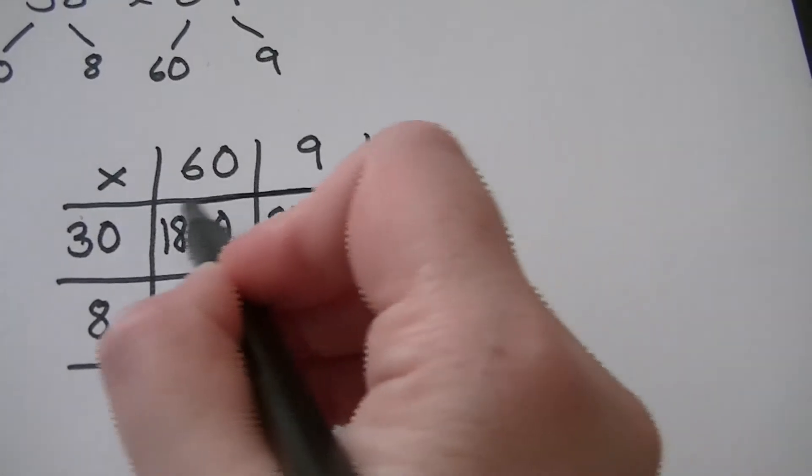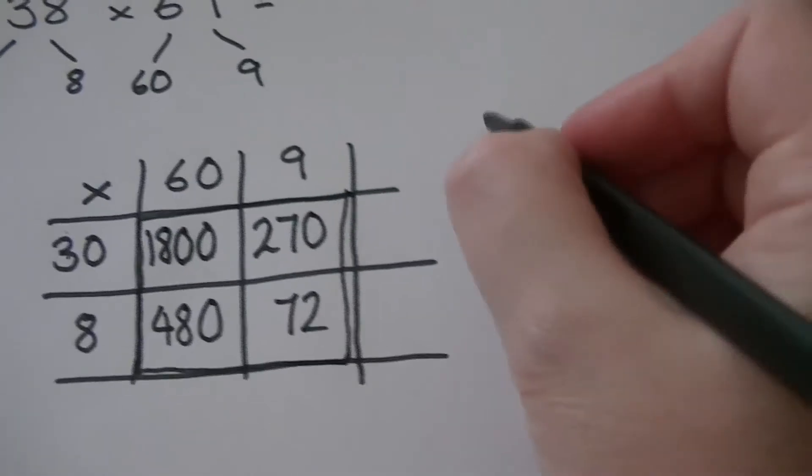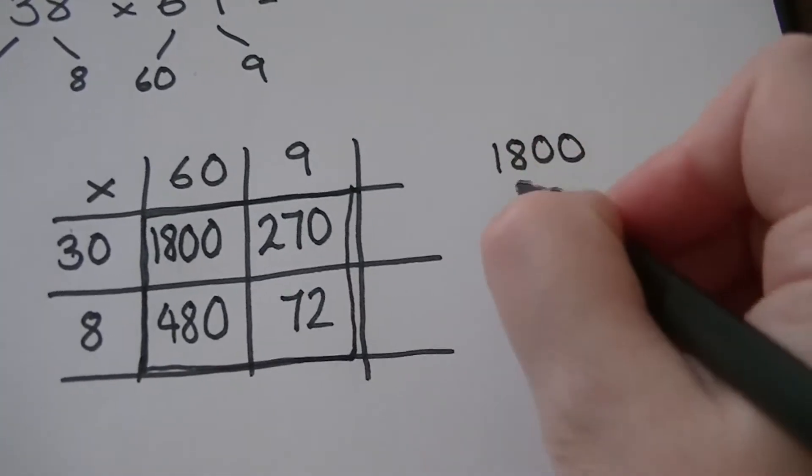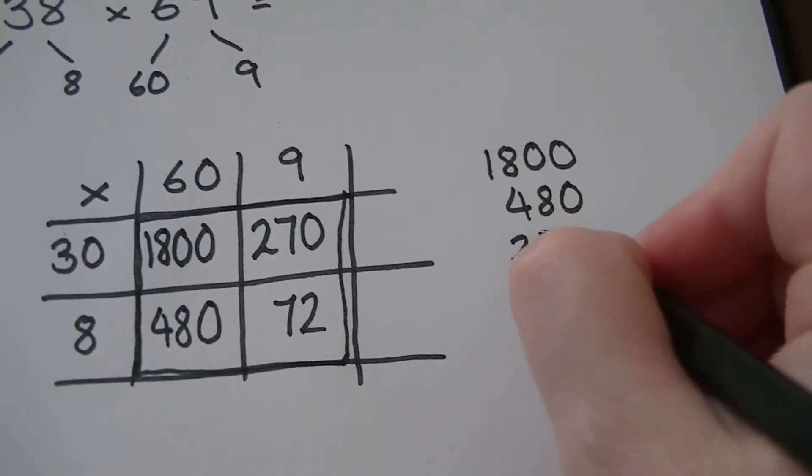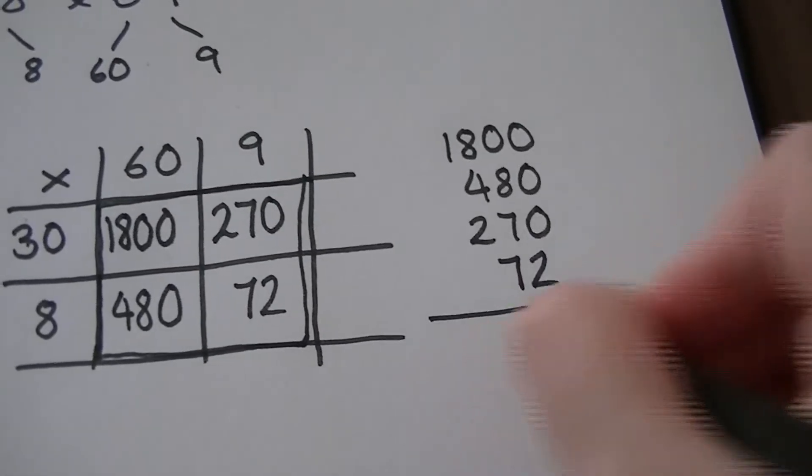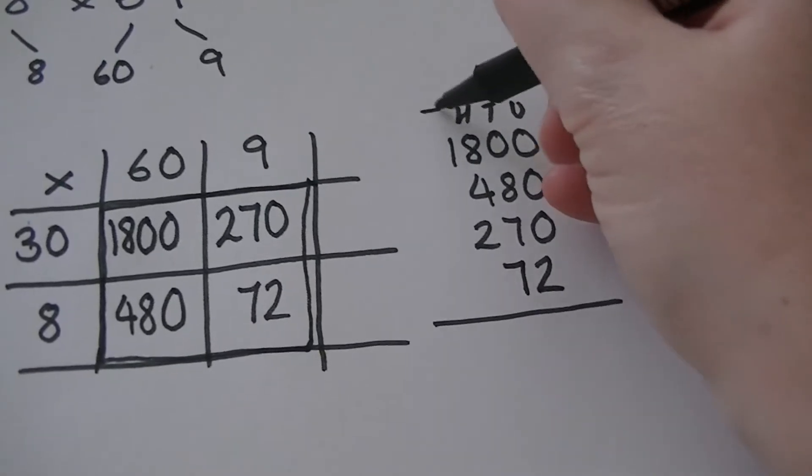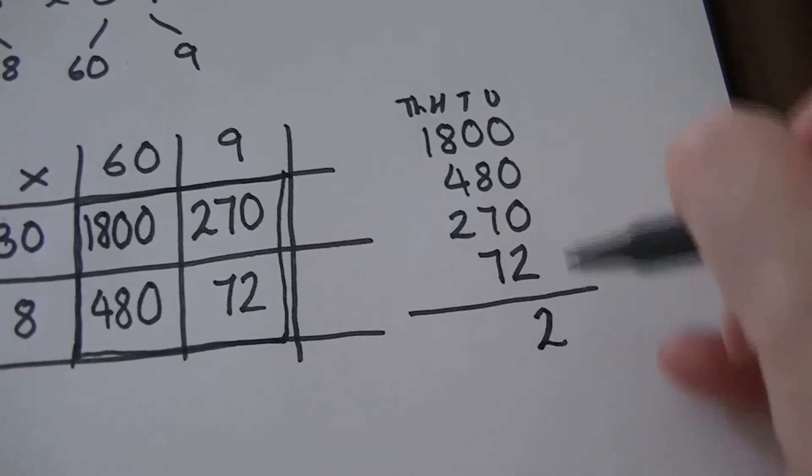Now we have to add these four numbers together and what I would always do is write them in correct columns so that then I don't make any errors. If you look, I've got the units here, the tens here, the hundreds here and the thousands here and so on. So now I can actually do a column method addition.